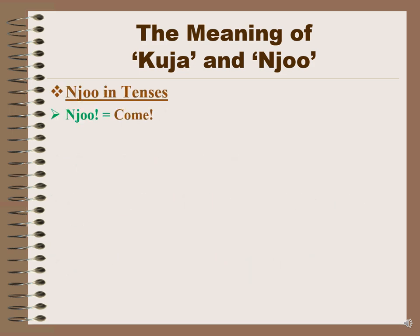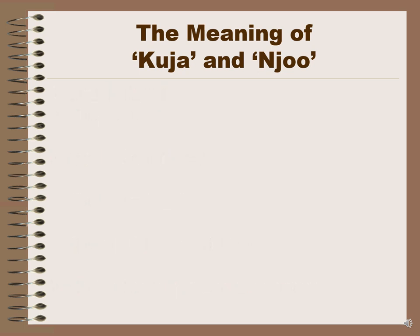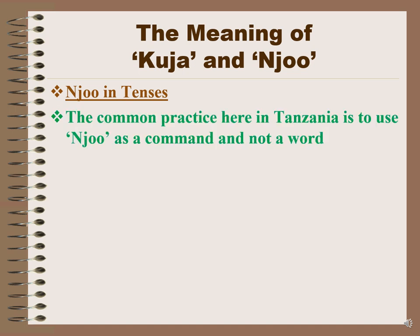Joo means 'come.' Joo can also be used for plural, like when you are telling more than one person to come. Joo hapa means 'come here,' joo sasahivi means 'come right now,' and joo baadaye means 'come later.' Joo kesho means 'come tomorrow,' and you can also say joo mwakani, meaning 'come next year.'